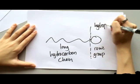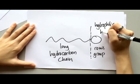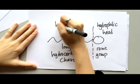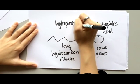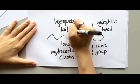The ionic group is also known as a hydrophilic head, which is water-loving component, and the hydrocarbon chain is also known as a hydrophobic tail, which is water-hating component.